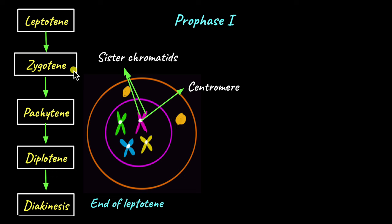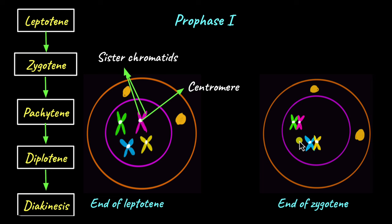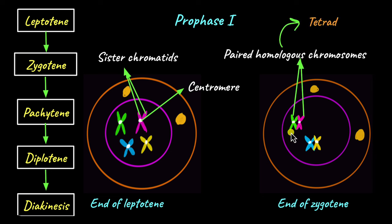In the next stage, zygotene, homologous chromosomes begin to pair up. Homologous chromosomes are chromosomes that have genes in the same region and same location — you have inherited one from your father and one from your mother. So in zygotene, the homologous chromosomes begin to pair up, and by the end of zygotene they have fully paired up. This pair is known as a tetrad because it contains four chromatids.